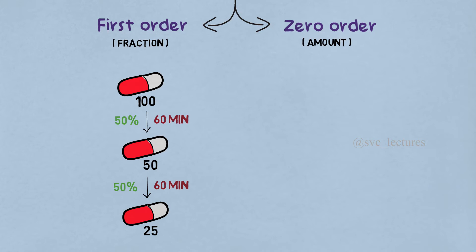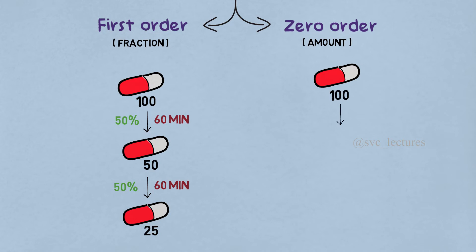Let's see an example for zero-order kinetics. Another drug of concentration 100 is given to a patient. After 60 minutes, the concentration in plasma is reduced to 70. After another 60 minutes, it is reduced to 40. In this case, for every hour, the same amount, 30, is eliminated. So in zero-order kinetics, for a particular period of time, the same amount of drug is eliminated.